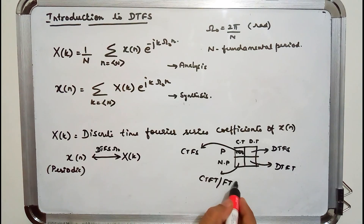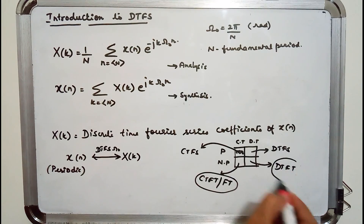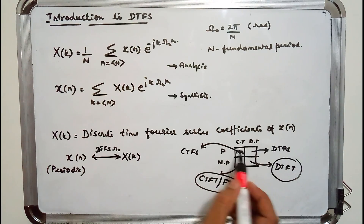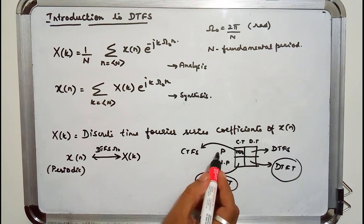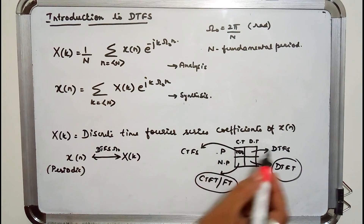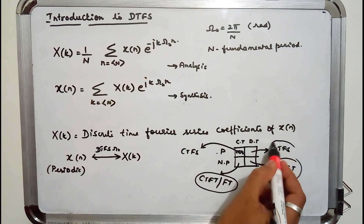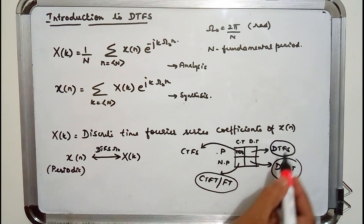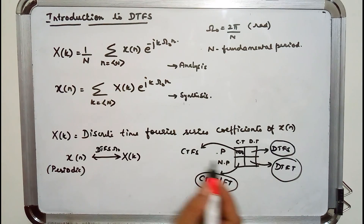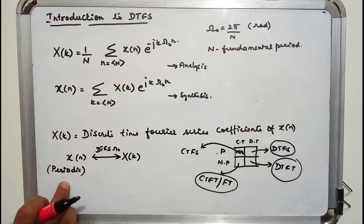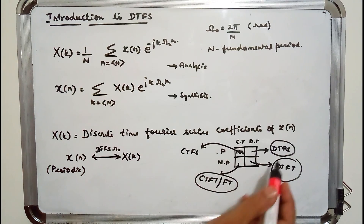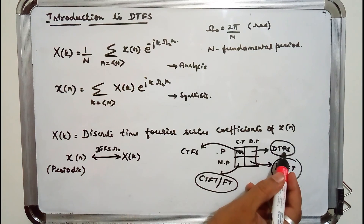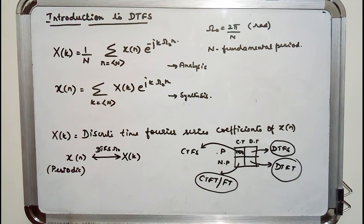We have already covered CTFT and DTFT. Now the category of signal we are looking at is periodic and discrete time. We will be representing a periodic and discrete time signal in the frequency domain using discrete time Fourier series coefficients.